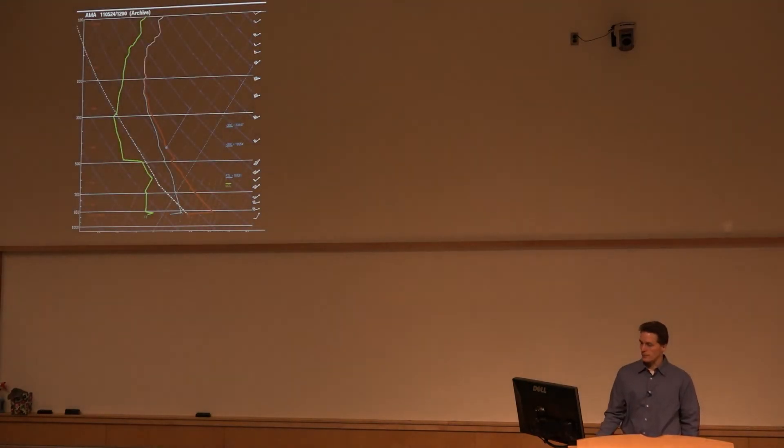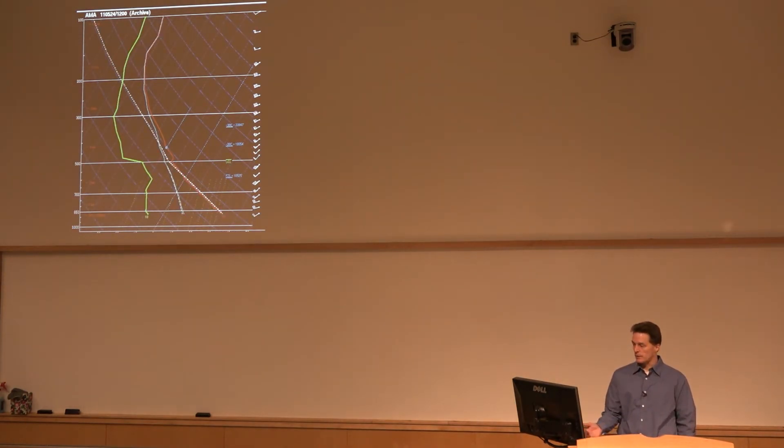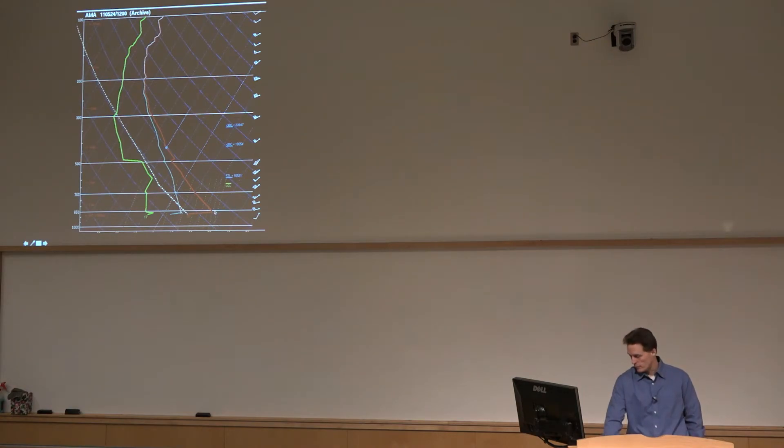So we take the sounding from Amarillo at 12Z and then we look at what happened to it if we apply surface heating and mixing. We take the temperatures that we found in the dry air, we apply that to the sounding and we get a very deep mixed layer. So it was easy to see with this Amarillo sounding with this shallow inversion that it's easy to get pretty deep mixing once the temperatures warm up. Once they warm up into the 80s, you're going to mix through a very deep layer.